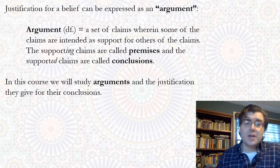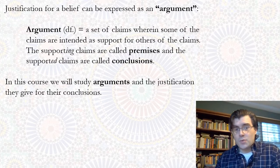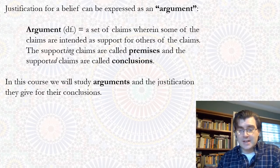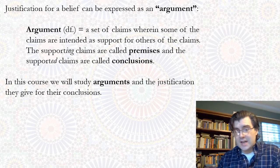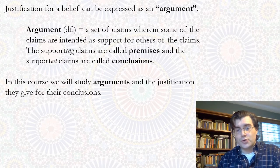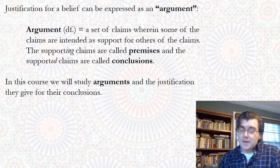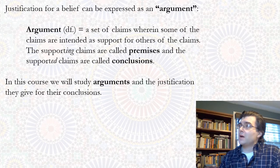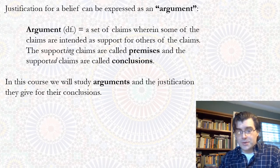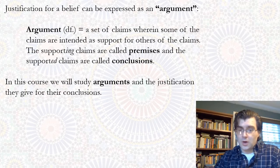The definition is: a set of claims where some of the claims are intended as support for others of the claims. The supporting claims in this set will be called premises, and the supported claims will be called conclusions. The basic idea is that an argument is a set of claims where some are supposed to support others — some are supposed to provide justification for others.